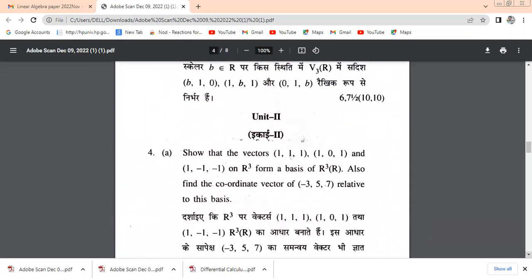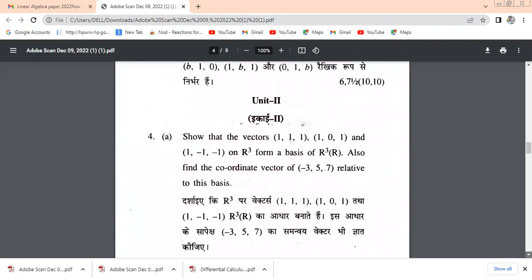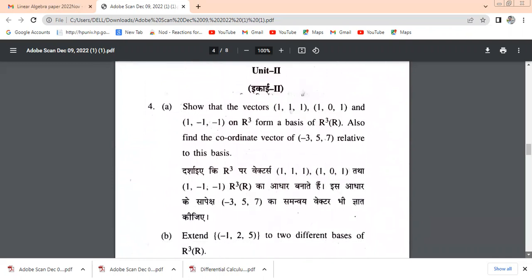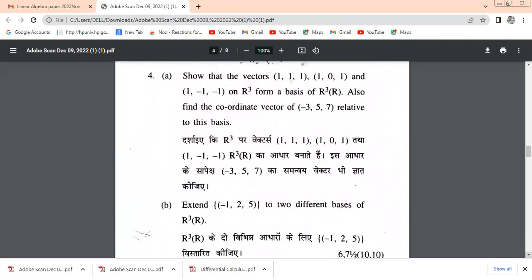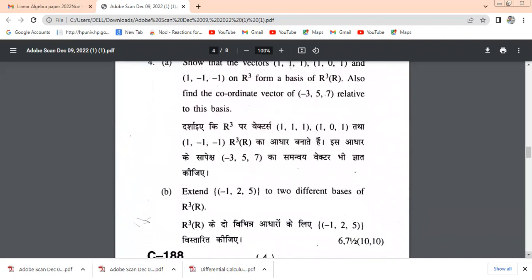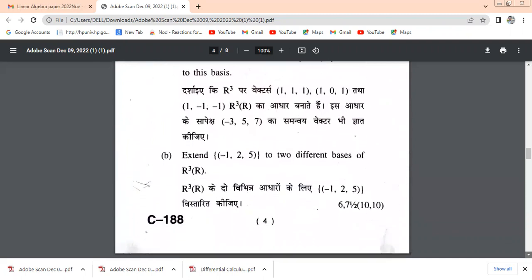Section B is of 13 and half marks for unit number 2. Again, you have to attempt either question number 4 A and B part or question number 5 A and B part.